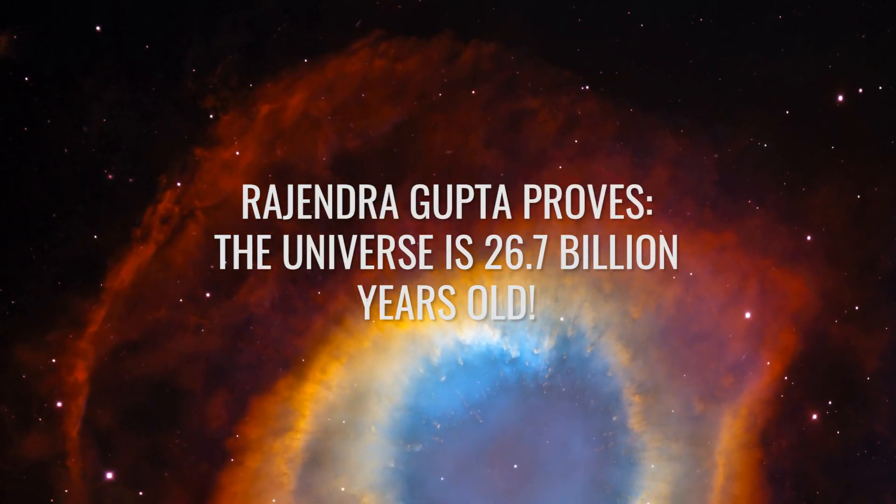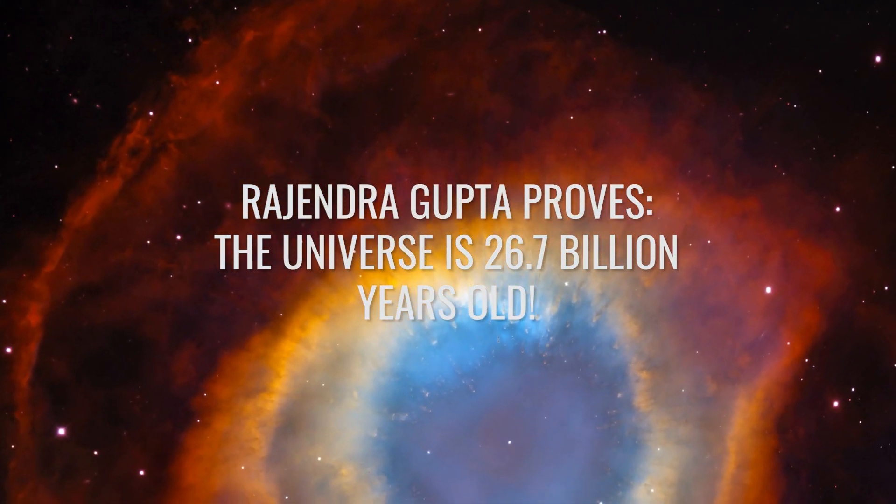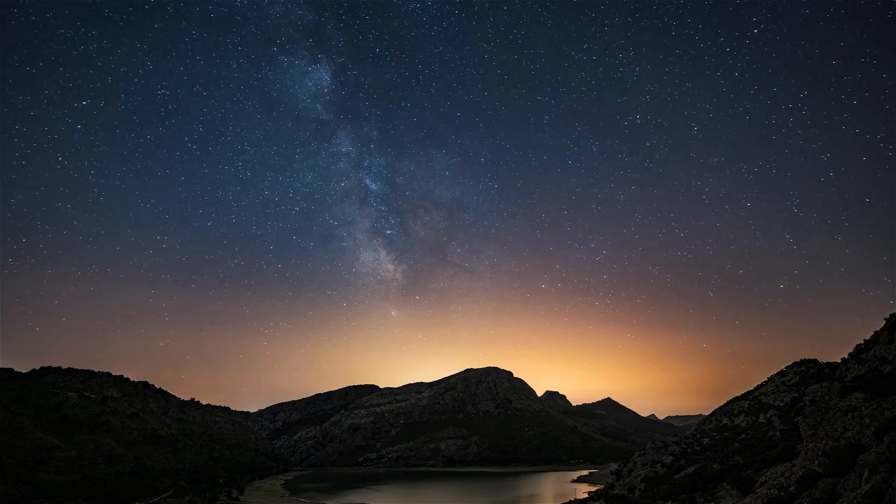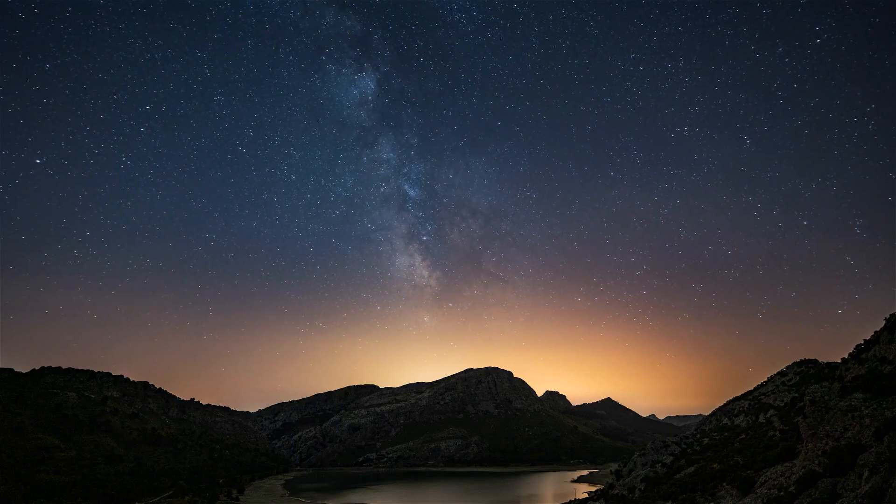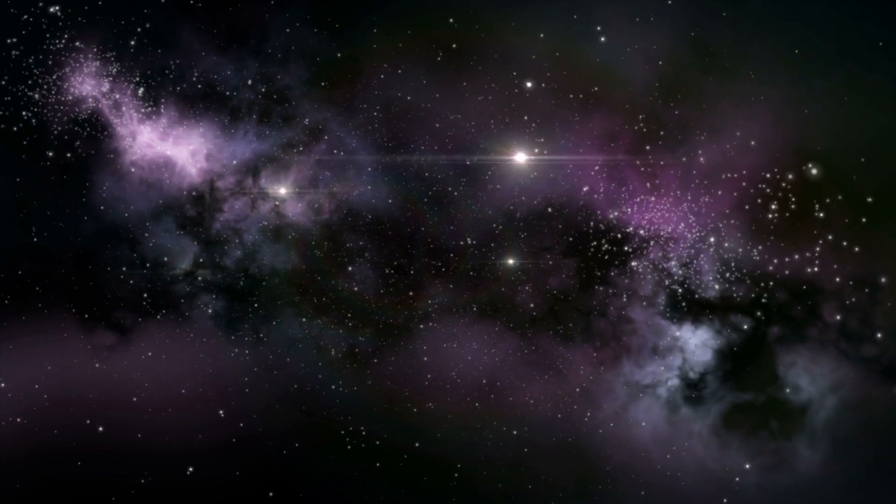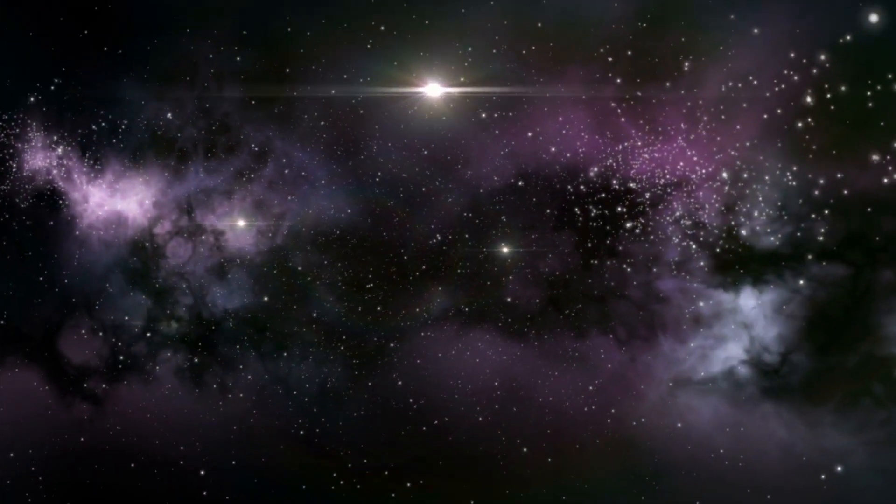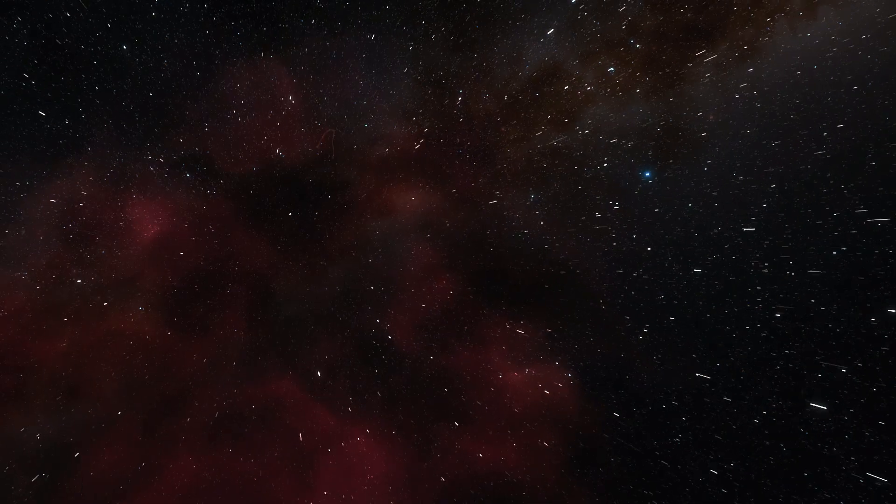Rajendra Gupta proves the universe is 26.7 billion years old. Did you think it would be so easy to come up with a new age for the universe? Rajendra Gupta is a scientist at the University of Ottawa in Canada. Gupta has been researching alternative models of cosmic expansion and the nature of dark matter and dark energy for some time.